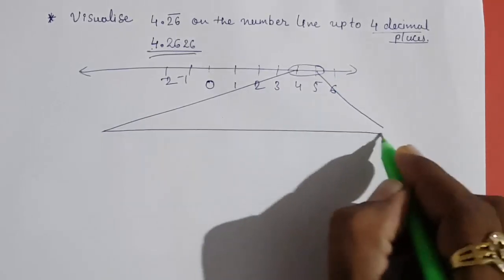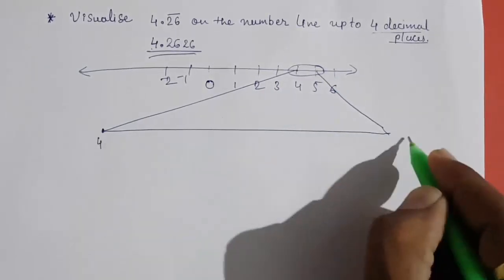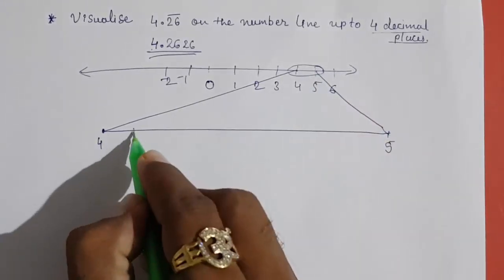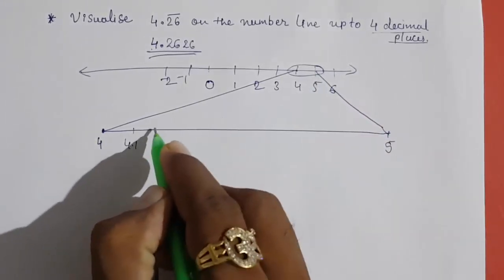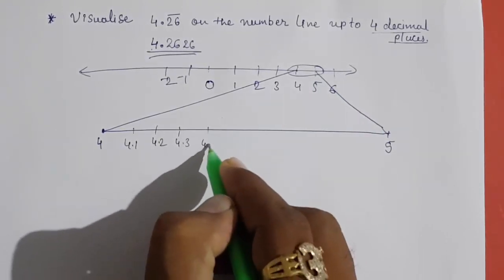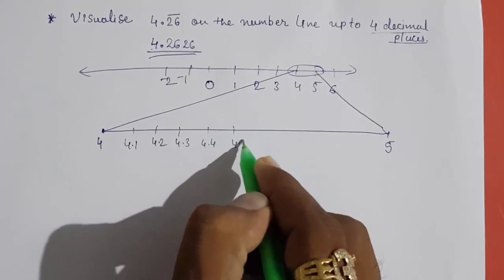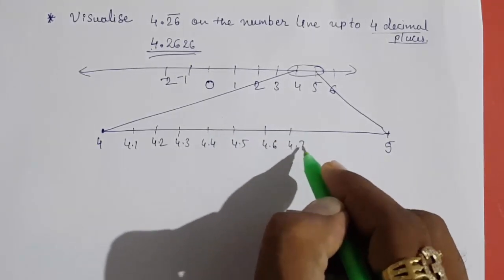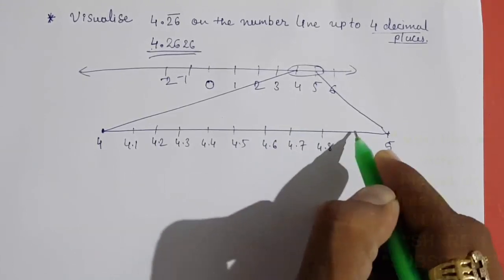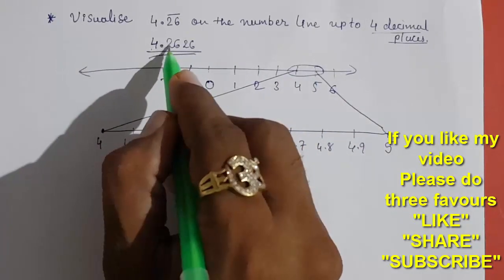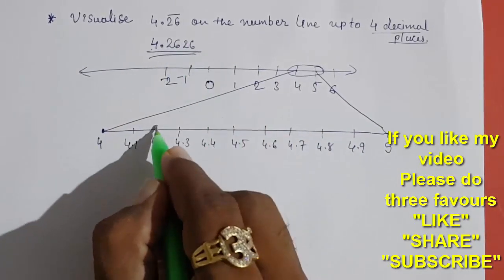Now this is 4, this is 5, and 10 numbers are there between these two: 4.1, 4.2, 4.3, 4.4, 4.5, 4.6, 4.7, 4.8, 4.9, and 5. Now we want to find 4.26, so after 2 there's 6, meaning 4.26 is between 4.20 and 4.30.